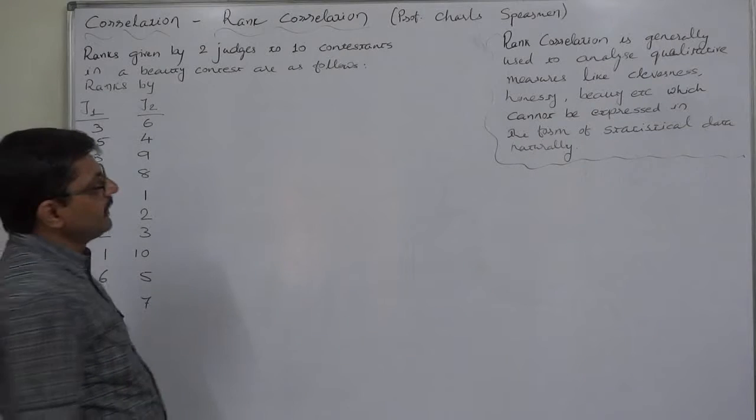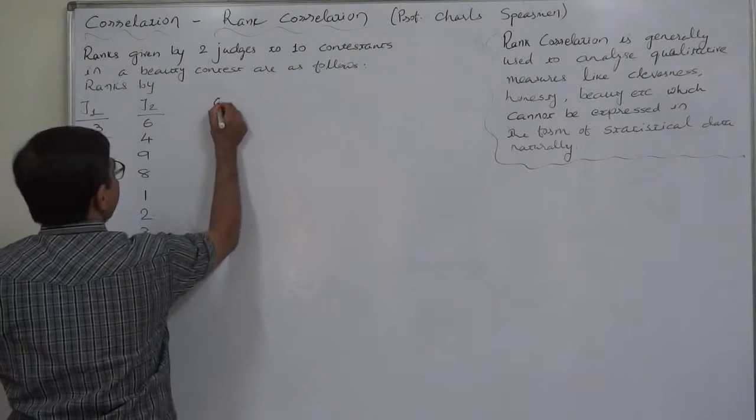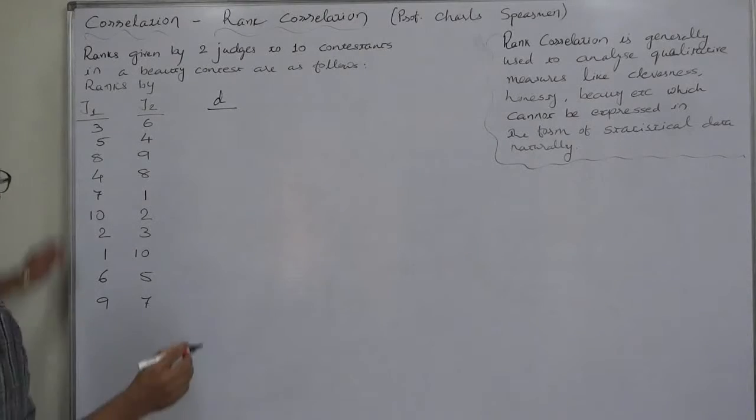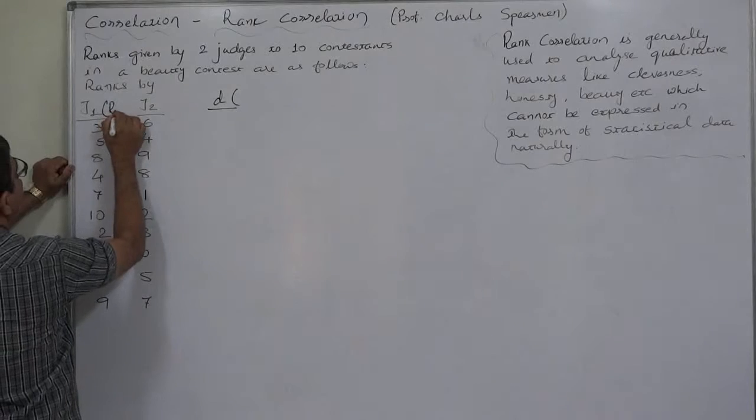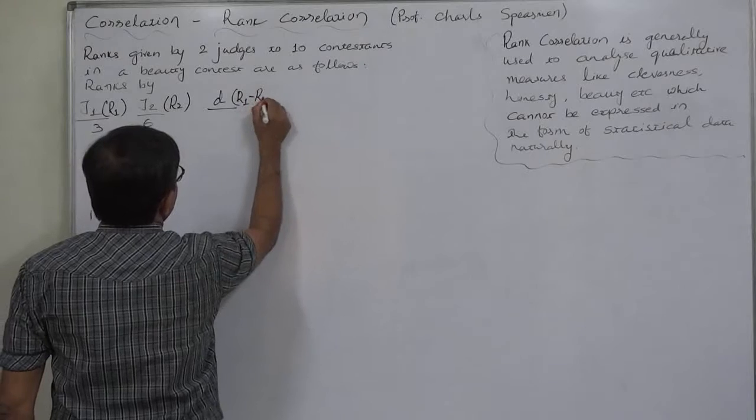Now, according to the method suggested by Professor Spearman, we just need to find out the difference between these ranks and the sign is small d. And that is nothing but rank by first judge minus rank by second judge. So we need to just take difference. Don't bother about the sign negative or positive because ultimately we are going to take the square values.